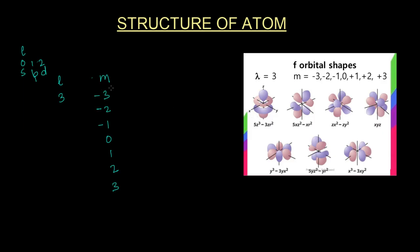And so there are 7 such possibilities. So here you see 7 orbitals: 1, 2, 3, 4, 5, 6, 7.